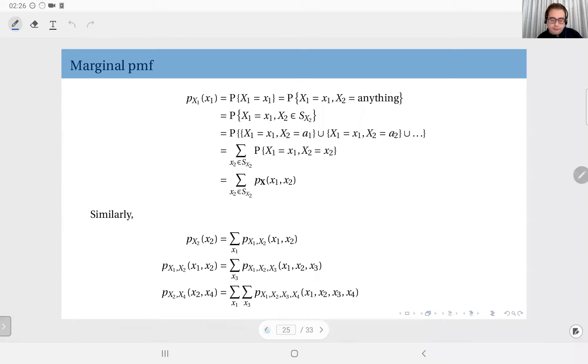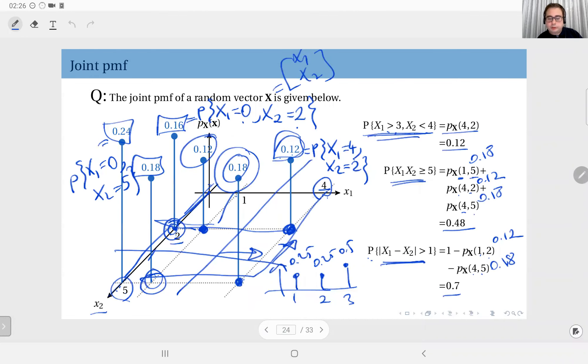For instance, here I can see that when the component x1 is 4, I can see how x2 behaves. Or rather, if I look at this, I can see how x1 behaves when x2 is 5.